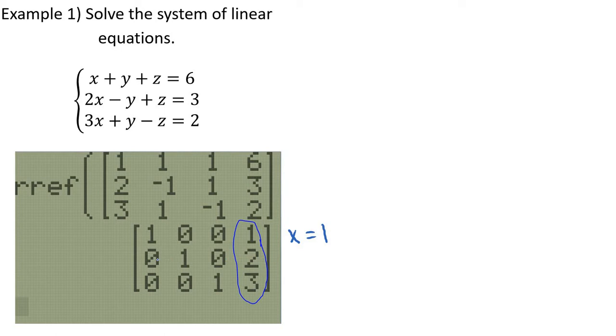Next row, 0x plus y plus 0z equals 2, or in other words, y equals 2. Last row, you can see where we're going here. 0x plus 0y plus z equals 3, z equals 3. The way we'll write that is 1, 2, 3, an ordered triple. I hope you can see where that came from. Remember how we took this original equation and wrote it as a matrix? x plus y plus z equals 6, that's just that first equation. 2x minus y plus z equals 3, that's the second equation. The calculator did Gaussian elimination, removed things for us, simplified it, now we interpret the result.